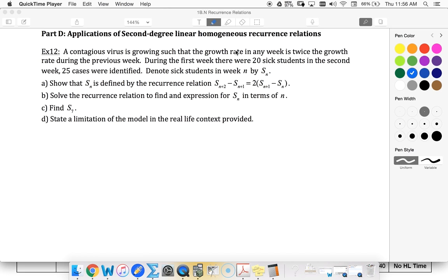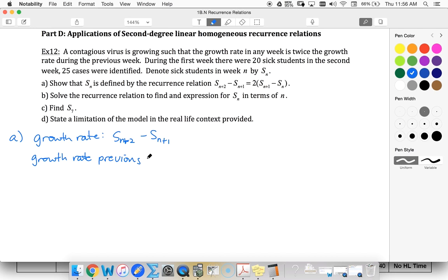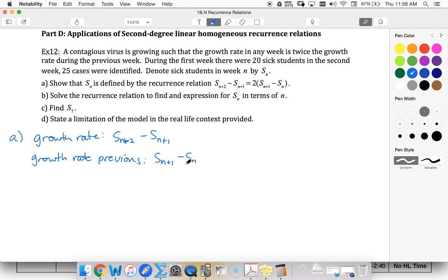Our growth rate in any week is going to be the difference in two consecutive weeks. They want us to use these two as our consecutive weeks, and then we've got twice the growth rate of the previous week. So growth rate previous, that's going to be S sub N plus one minus S sub N. This is twice this one. So growth rate in a given week is twice the growth rate of the previous week.